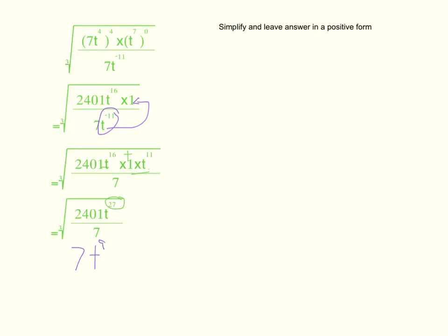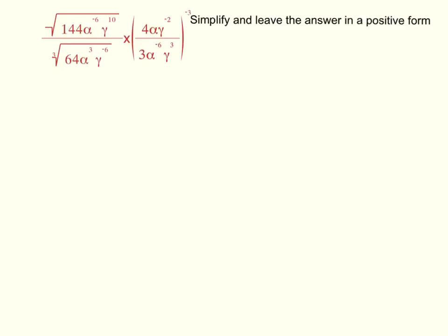Going back to the question, it asks us to simplify and leave the answer in positive form. We have simplified it and kept the answer in a positive form, which means we have solved the question correctly. Now let's move on to question 2. Question 2 also asks us to simplify and leave the answer in a positive form. To make things easier, I'm going to split the question up into two sections — section 1 and section 2.